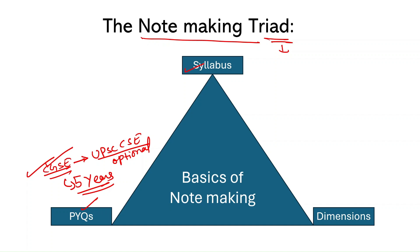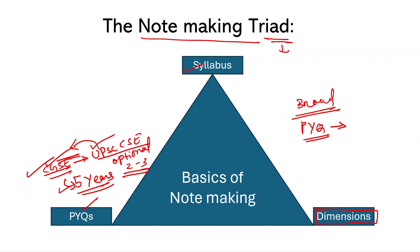What is asked in CSE in 2023 is relevant for CGSE 2024 because the syllabus is more or less the same and is static in nature — there is no scope for current affairs. Questions from UPSC CSE are replicated in CGSE mains. So analyze five years of CGSE PYQs and two to three years of UPSC CSE optional questions. The syllabus gives you a broad overview, while PYQs give you a specific and concise overview — what dimensions are actually being tested, what the examiner actually wants.